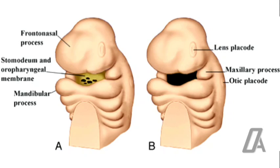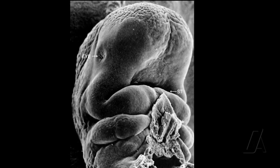The buccopharyngeal membrane is a temporary structure formed by the mucosa of the pharynx on the inside, or endoderm, and mucosa of the mouth on the outside, or ectoderm. This is one of the two sites where there is no intervening mesoderm, the other site being the cloacal membrane. The buccopharyngeal membrane ruptures at about the 28th day of intrauterine life, establishing the continuity of passage between the mouth and pharynx.